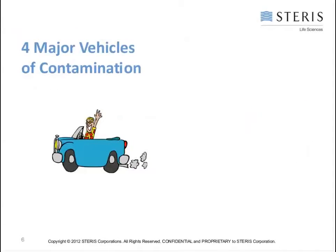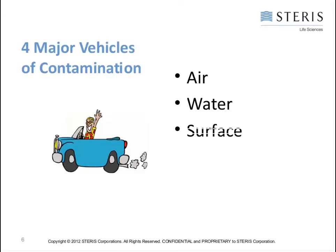The four major vehicles of contamination are: air — the air we breathe every day; water — microbes love water and use it for growth; the surfaces of clean rooms in any general area, from class 100 to class 100,000; and people — people are the largest source of contamination.